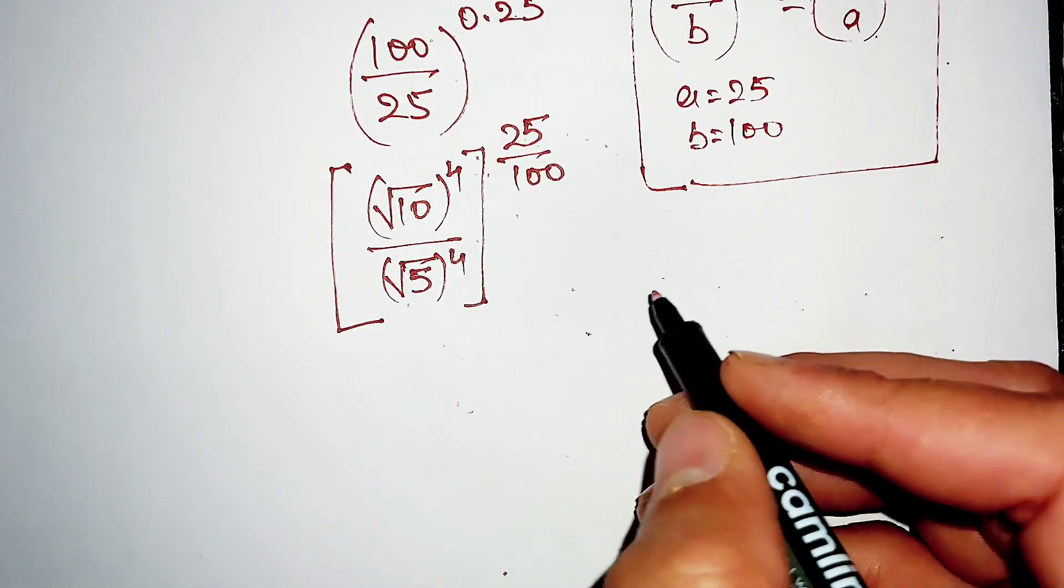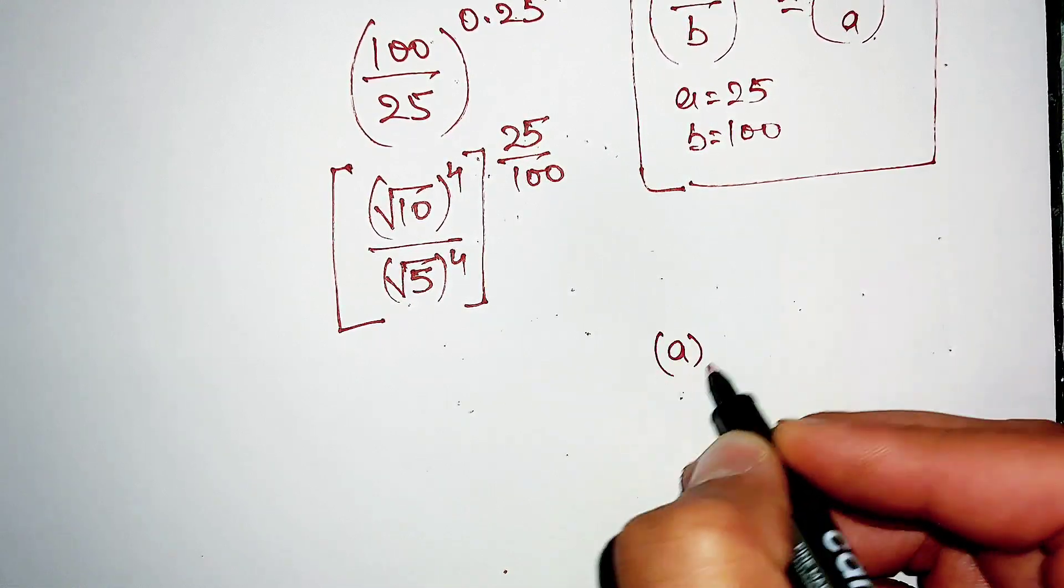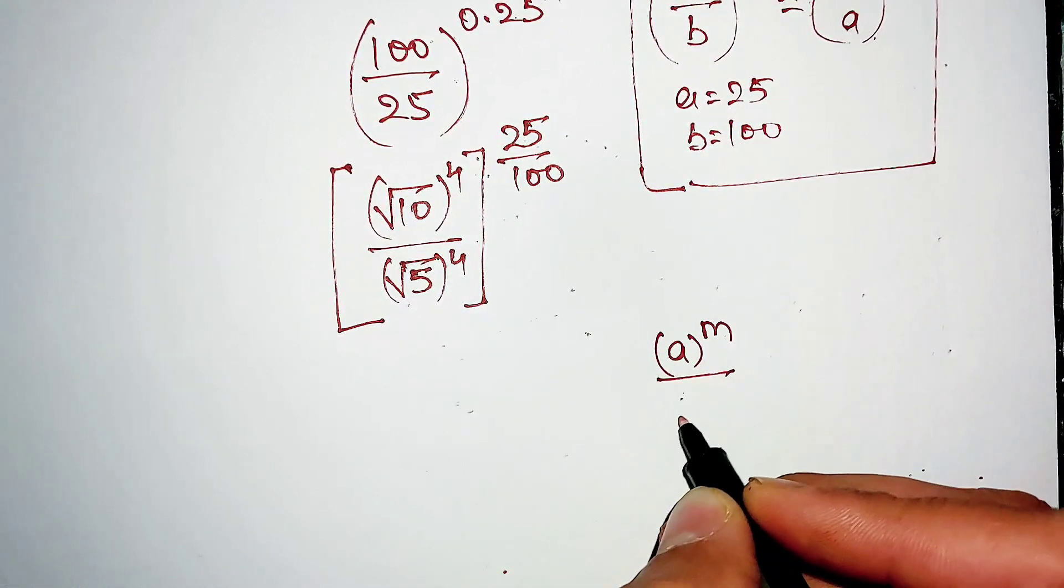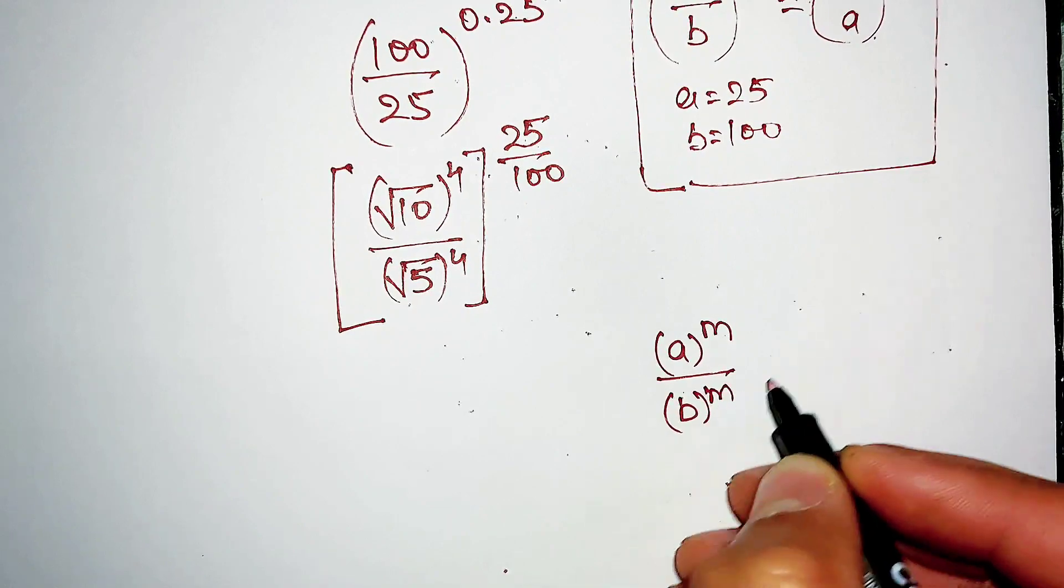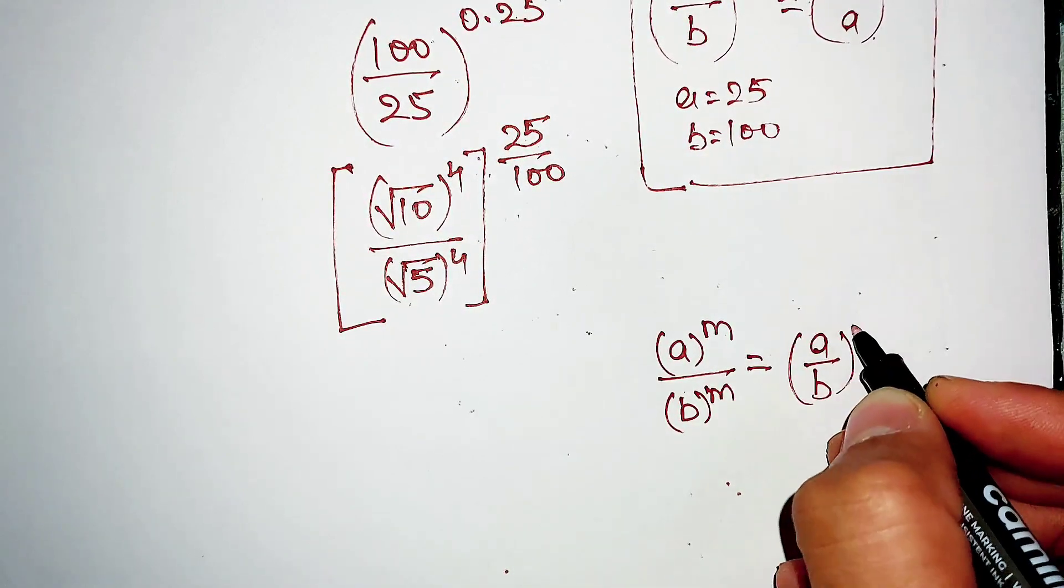Now here we are applying another exponential property: a^m divided by b^m which is equal to (a/b)^m.